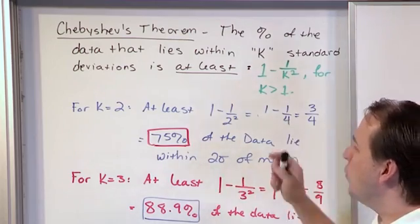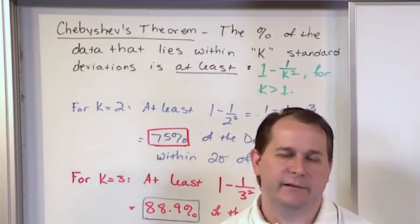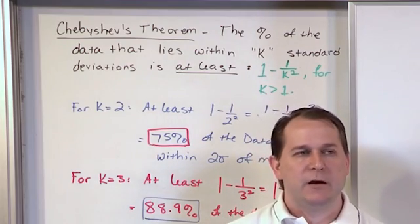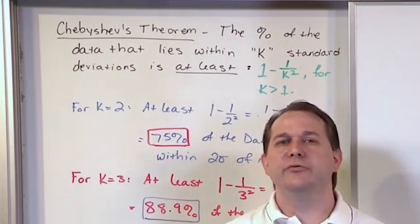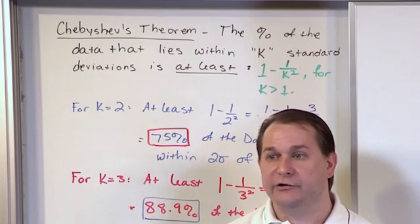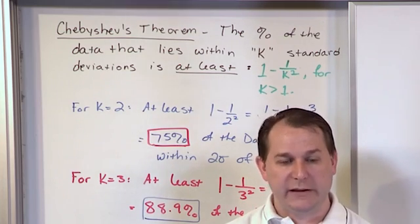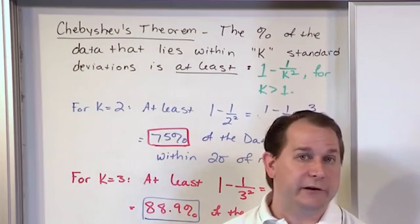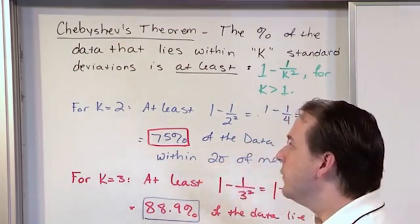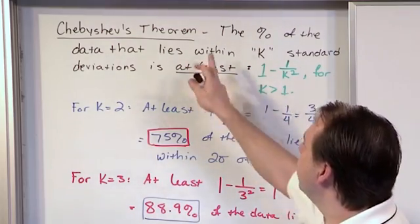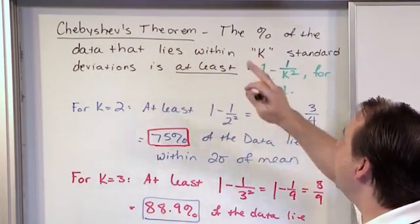So usually when we're trying to apply these empirical rules, we're trying to figure out, within one standard deviation, within two standard deviations, within three standard deviations, how much percent is going to lie between the boundaries there between two standard deviations, let's say. So the way Chebyshev's Theorem is written is it says the percentage of the data that lies within k standard deviations.